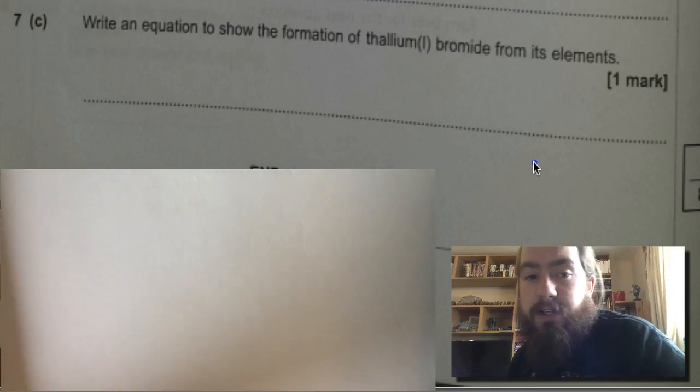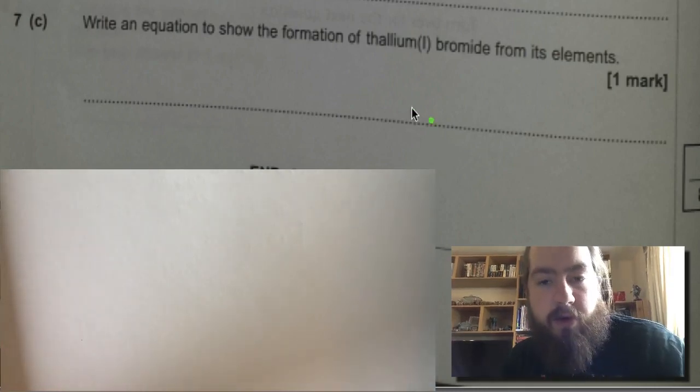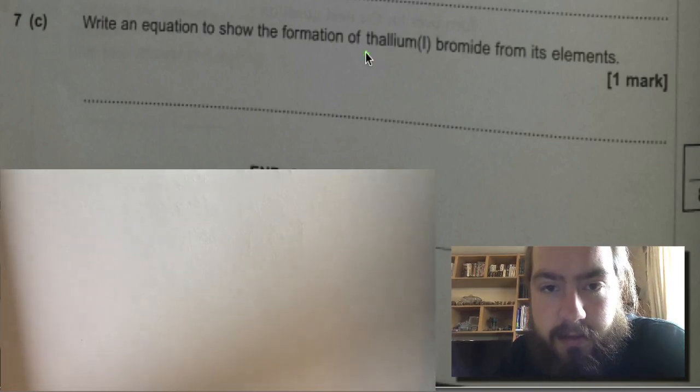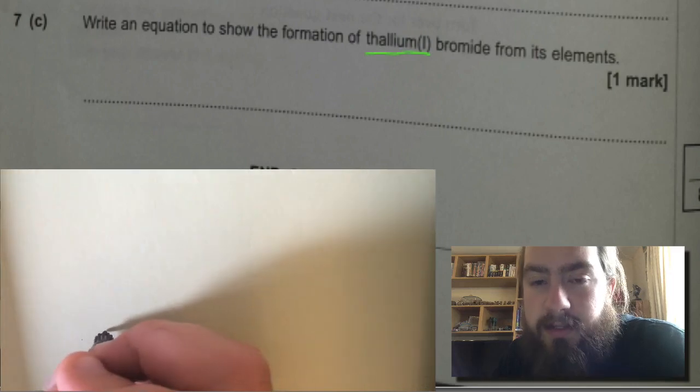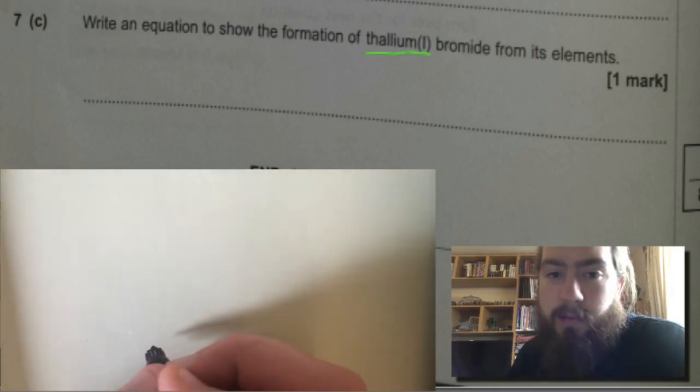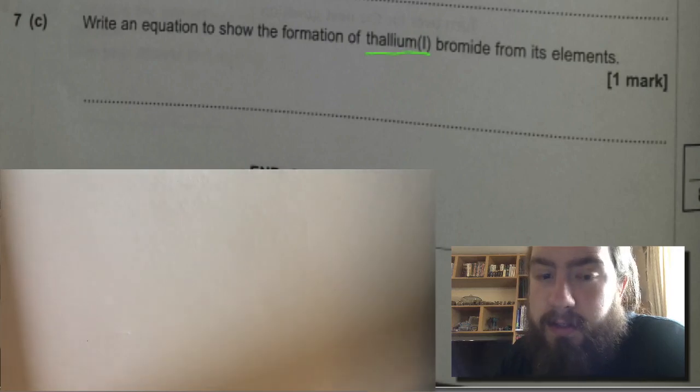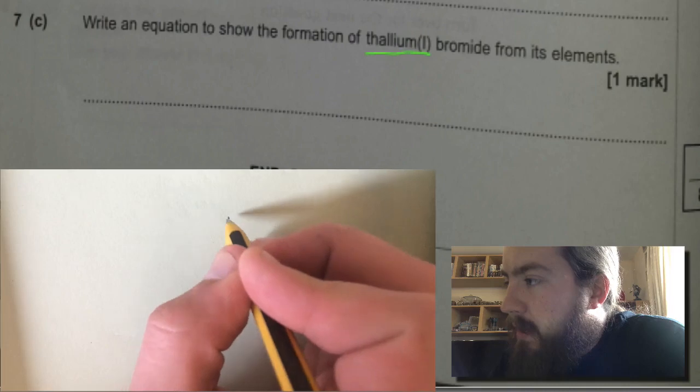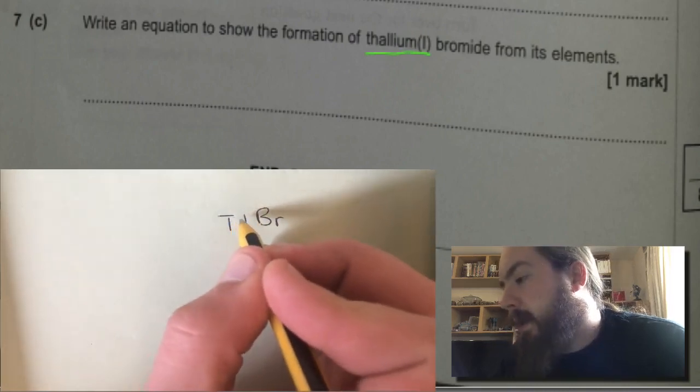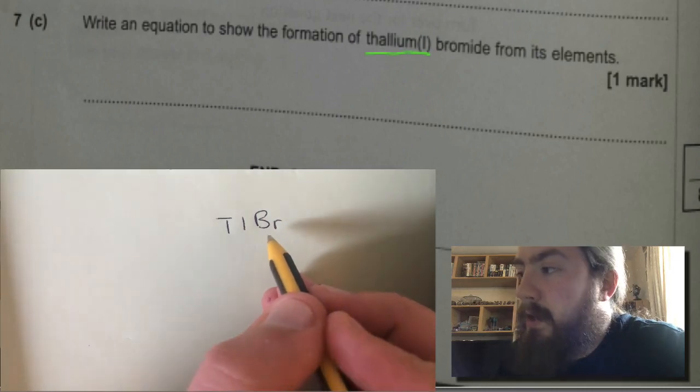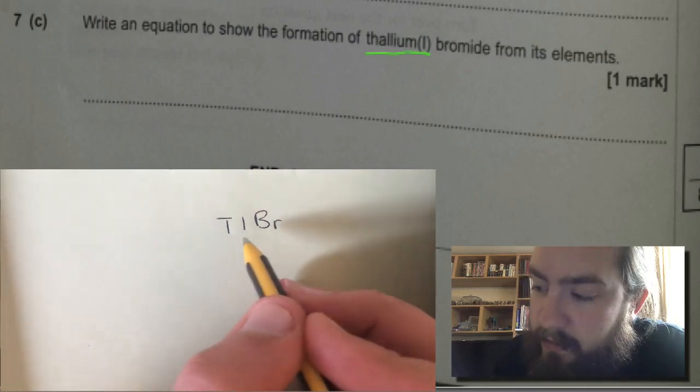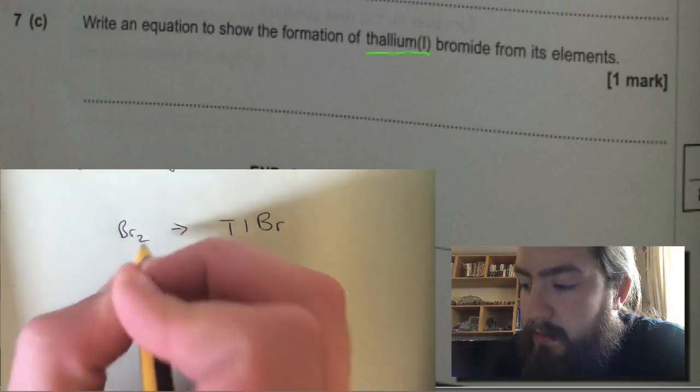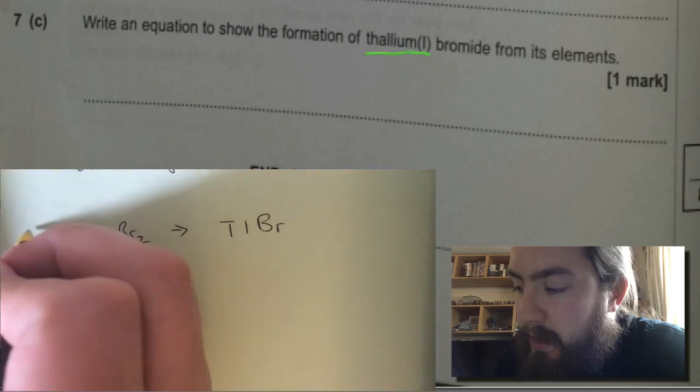Seven C. Write an equation to show the formation of thallium bromide from its elements. Now it's important here to realize that it's about thallium 1 bromide, not the thallium bromide that was earlier on in the question. Thallium 1 bromide will be TlBr, because 1 would have a charge of 1 and the bromine would have a charge of minus 1 because it's a halogen. So we need to go from Tl to Br. Bromine is normally found as a diatomic gas and thallium is a metal. So we can just do thallium. Now to make that balance, nice simple one.